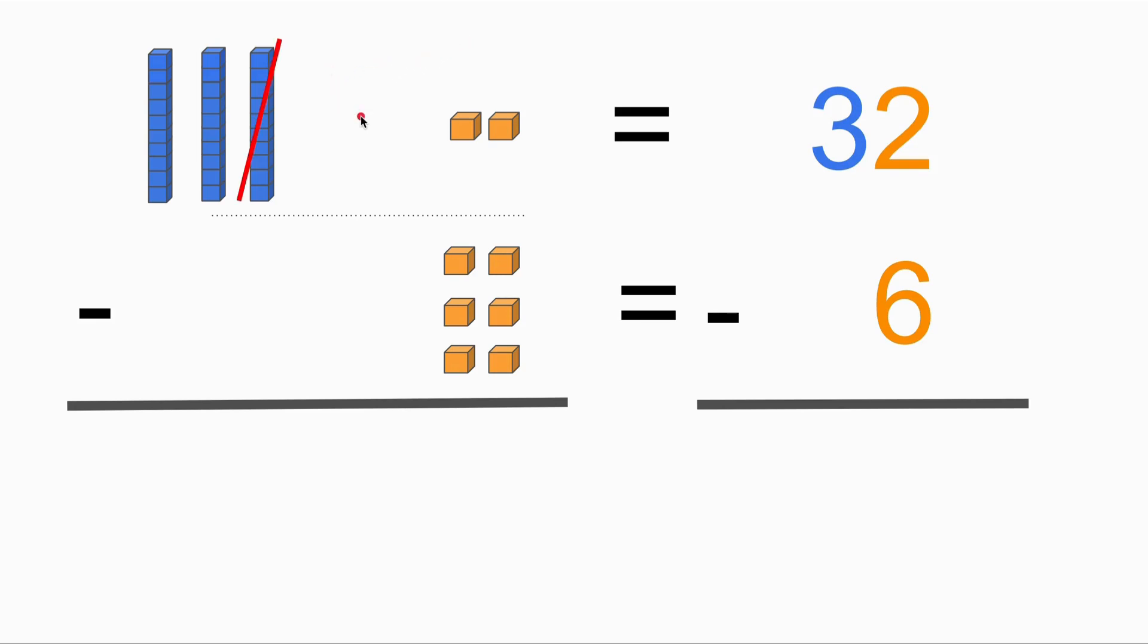That means we will have one less tens block, which remains two tens blocks here. So we got two here instead of three now. And then this tens block will be placed at the ones place. So now we are going to have how many blocks in ones place? One, two, three, four, five, six, seven, eight, nine, ten, eleven, twelve. So we got 12 orange blocks at ones place.